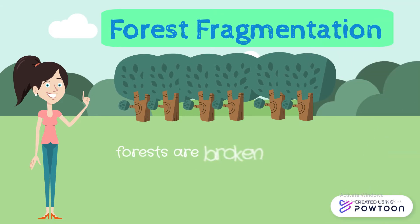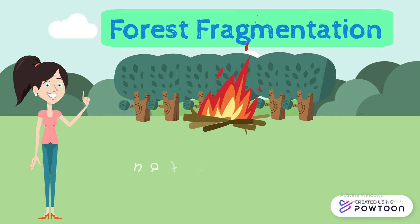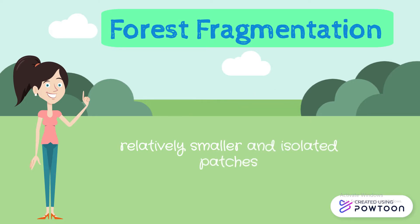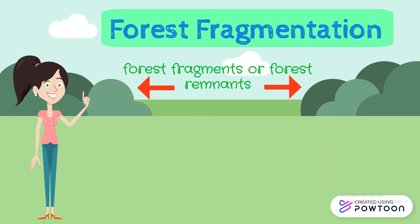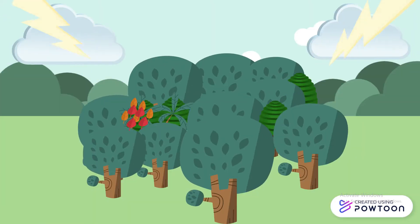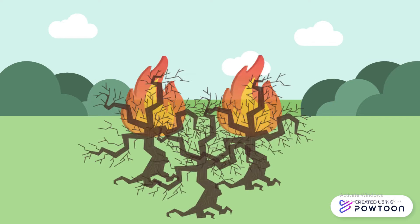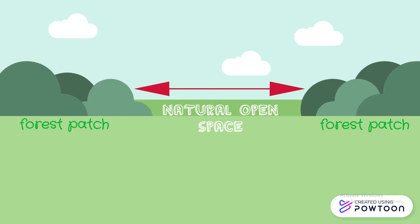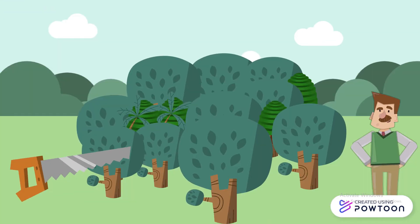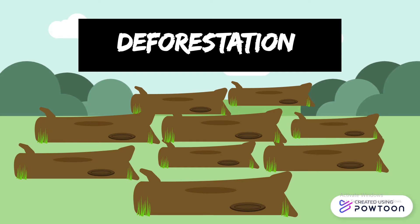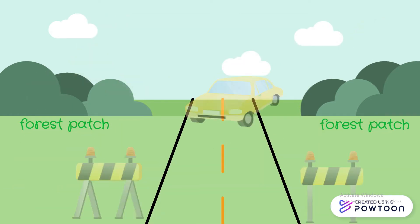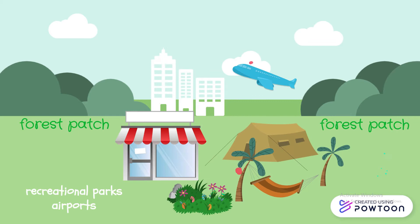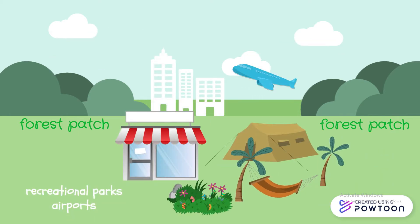Forest fragmentation is when large forests are broken or reduced, either naturally or man-made, into relatively smaller and isolated patches of forests known as forest fragments or forest remnants. It begins by the clearing of forests either by wildfires, resulting in forest patches separated by a natural open space, or through logging or the massive cutting of trees called deforestation, as forest lands are converted into subdivisions, roads, agricultural lands, and other land uses by people, leading to patchy and disconnected forest islands.